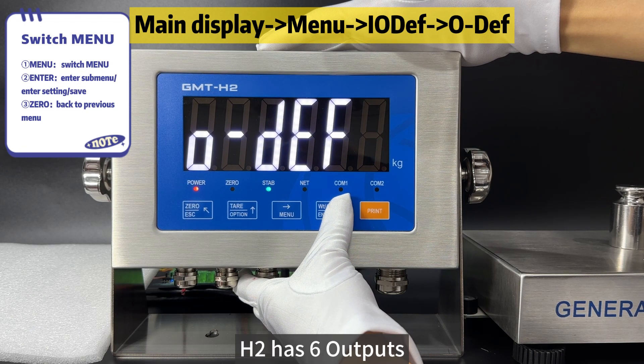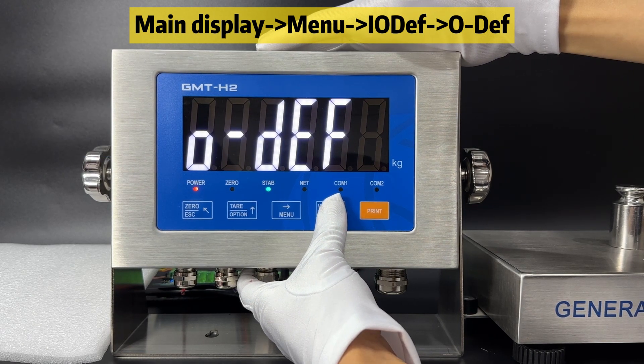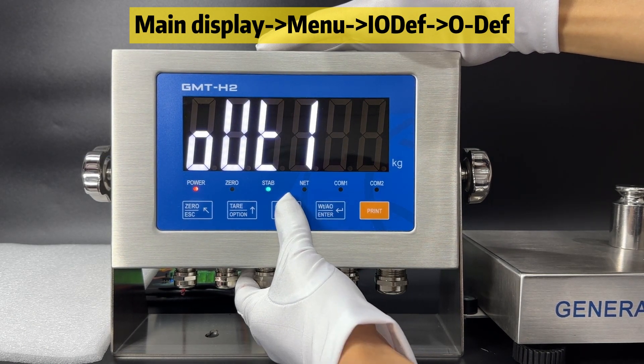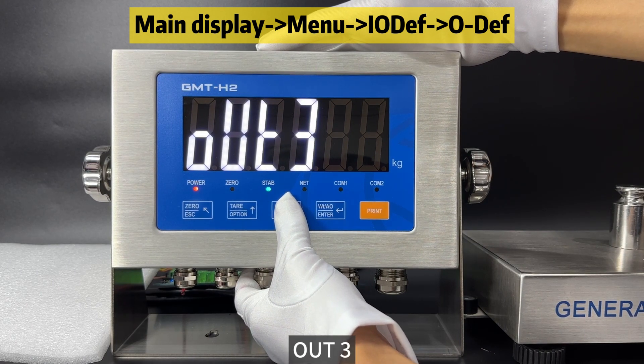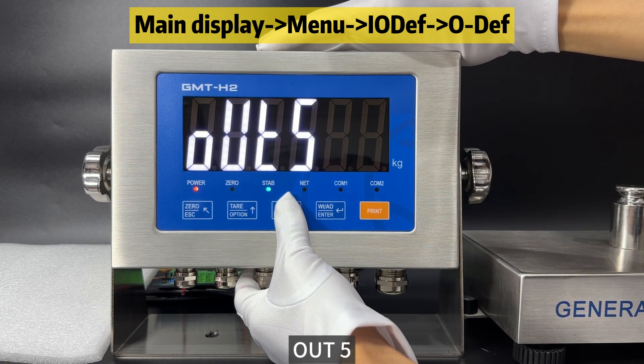H2 has six outputs, which are OUT1, OUT2, OUT3, OUT4, OUT5, and OUT6.